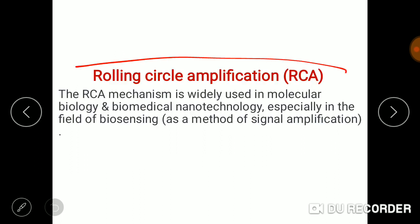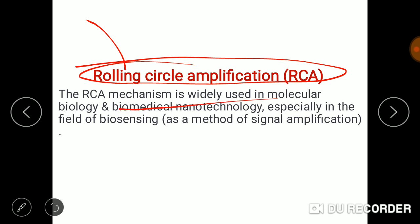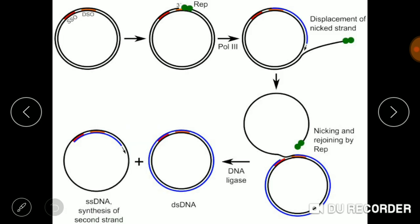Rolling circle amplification — RCA — is a part of the rolling circle model. The RCA mechanism is widely used in molecular biology and biomedical nanotechnology, especially in the field of biosensing. Rolling circle amplification is a very essential method of single amplification.